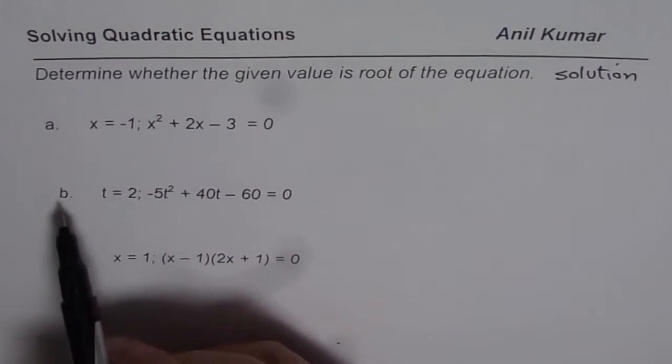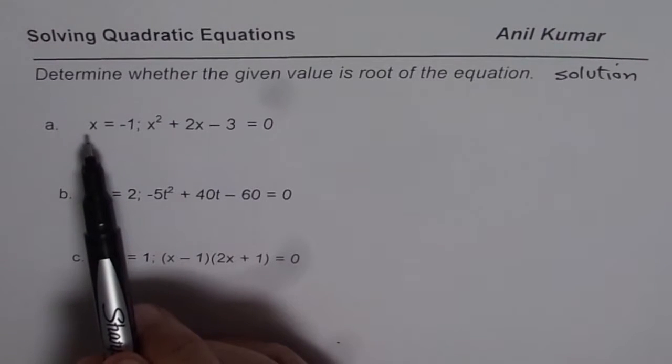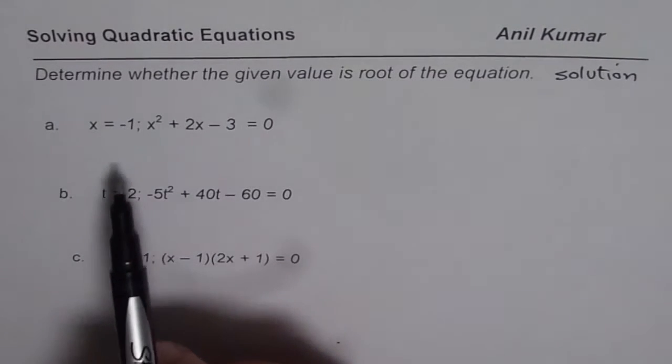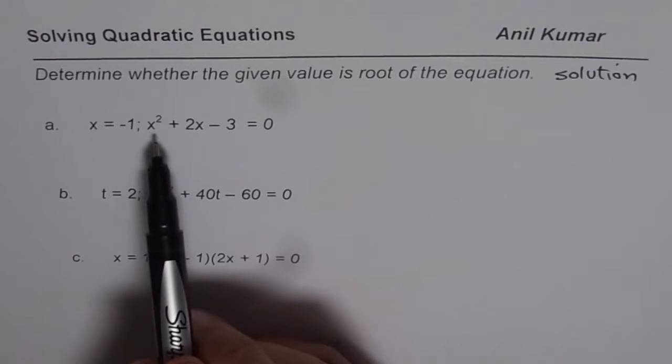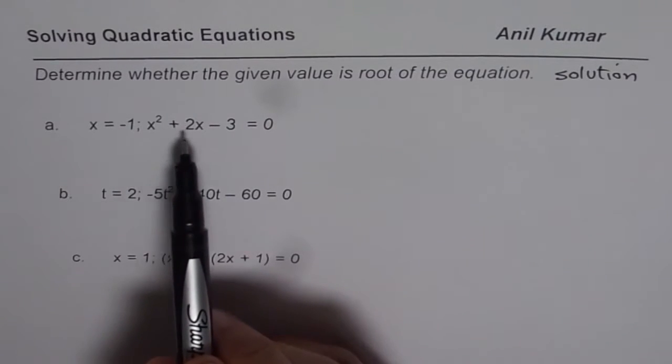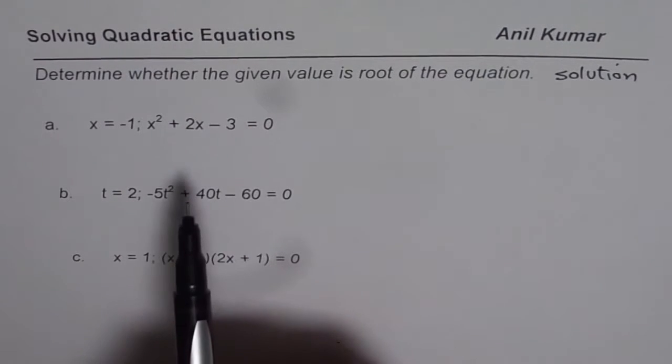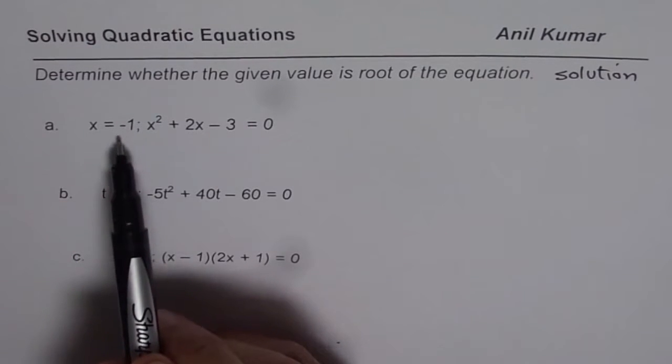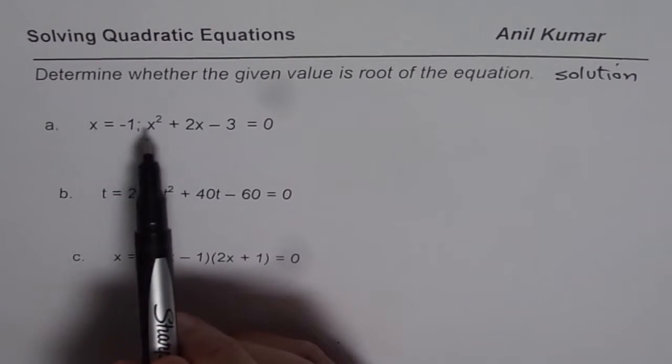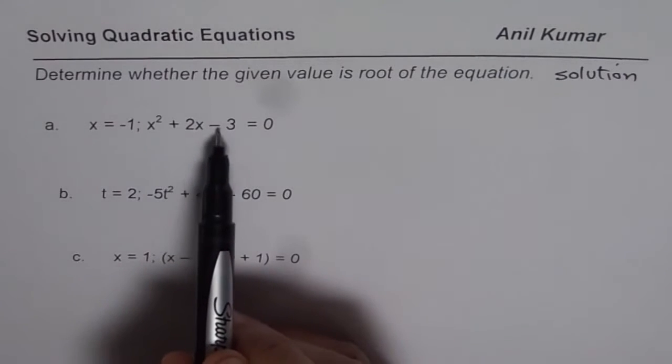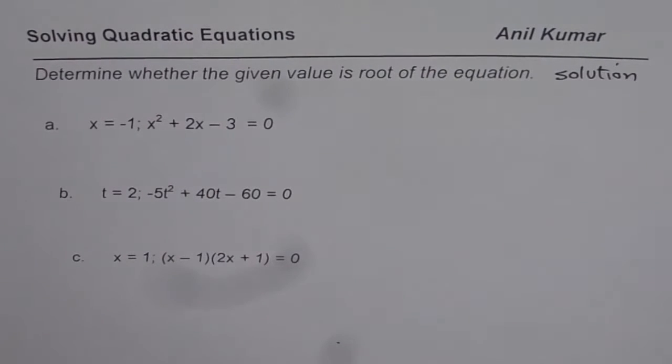Now part a, b and c, we have three questions here. First one is x = -1 and the equation given to us is x² + 2x - 3 = 0. Now if x = -1 is a root, then substituting -1 for x should give me 0. That is what we understand by this. Let us try it out.